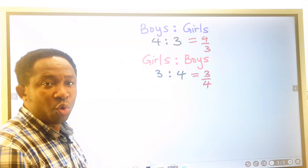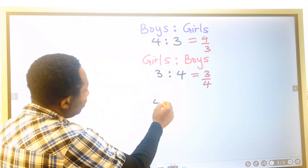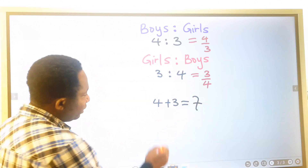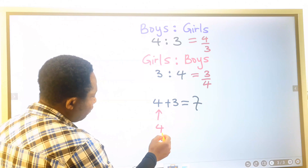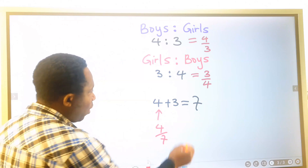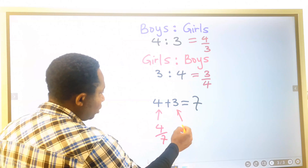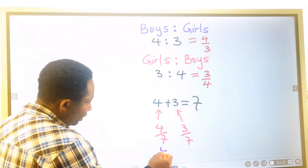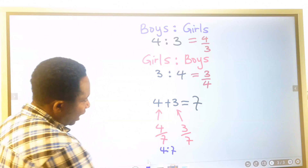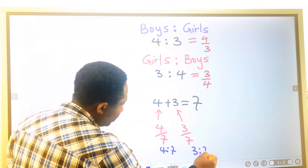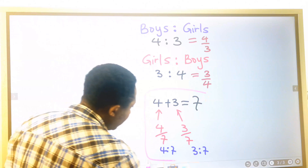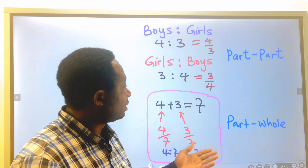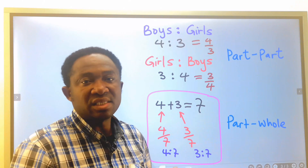But for part-to-whole, the total number is four plus three, which is seven. The boys are four, so the ratio is four to seven. While the girls are three, so the ratio is three to seven. When considering part-to-whole, the analysis of part-to-part and part-to-whole are slightly different.